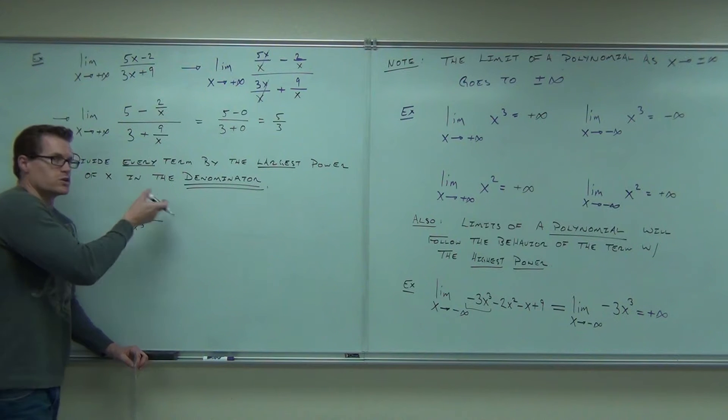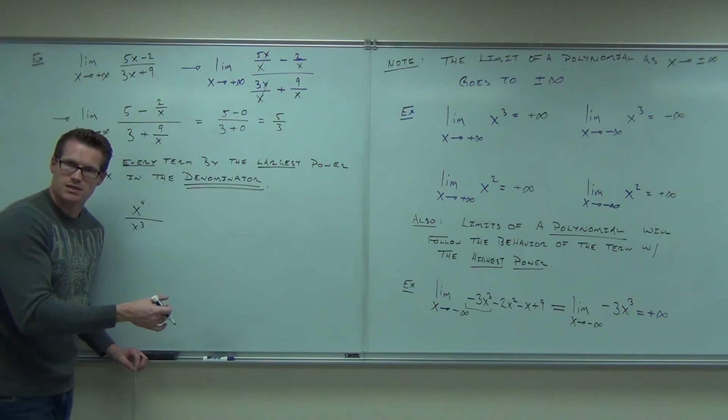So it's always by the largest power in the denominator. That way you won't be undefined. You might be going to infinity, but you won't be undefined. Does that make sense?